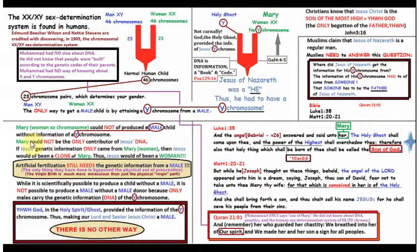If Jesus, if his genetic information only came from Mary, a woman with XX chromosome, then Jesus would have been a clone of Mary. If the only contributor of the genetic information, the genetic codes, was Mary, then Jesus would have been a clone of Mary. Thus, Jesus would have been a woman. He would have looked just like Mary. And he would have been a woman, not a man. So, he had to get this Y chromosome from somewhere.